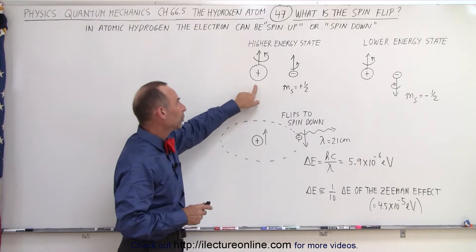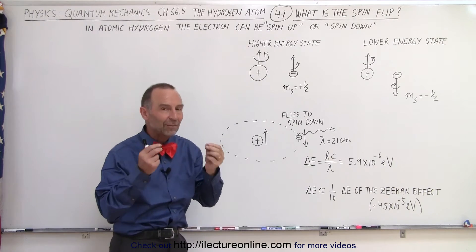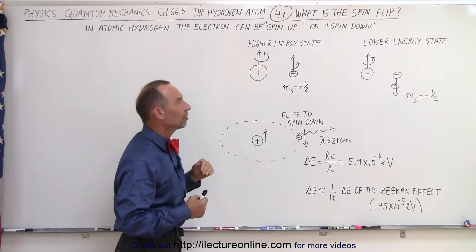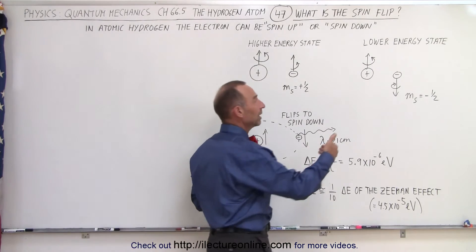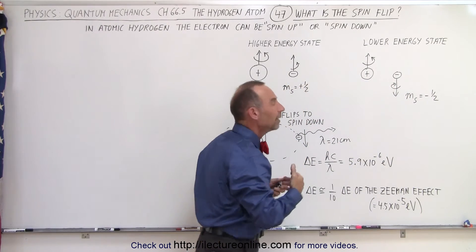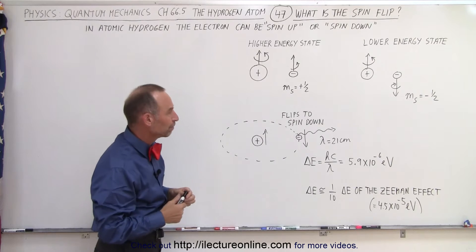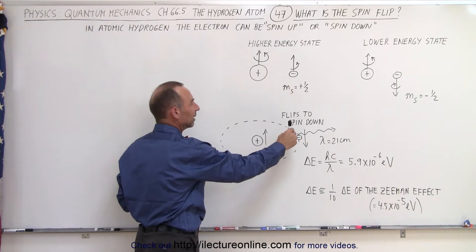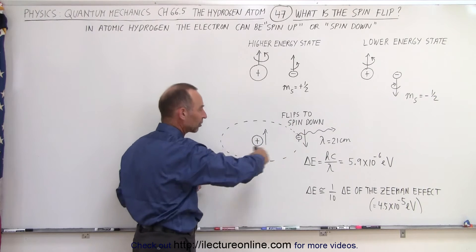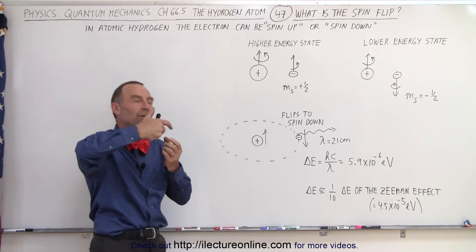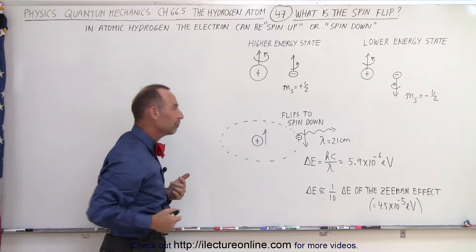It turns out when both the proton and the electron have the same spin, then the electron is in a higher energy state. But when the electron is an opposite spin relative to the proton, then we're in a lower energy state. So what happens is, let's say that we have an electron that has a spin in the same direction as the proton, the electron is zipping around the nucleus, and all of a sudden, the electron jumps and goes from spin up to spin down.